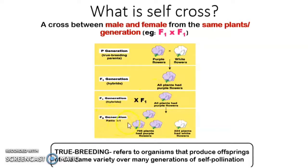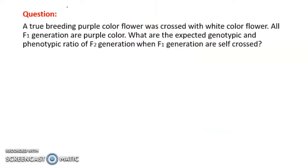The phenotypic ratio you will get from a self-cross, if it is monohybrid, is 3 to 1. To help you understand better, let's look at an example question.